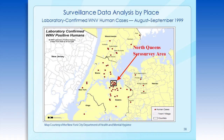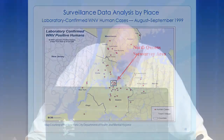This map is an example of laboratory-confirmed West Nile cases among humans for August and September 1999. Each red dot represents a human case. Cases are scattered throughout the area, although there appears to be a cluster in the North Queens area as indicated by the arrow. This suggests that there may have been a serial survey done in that area that could account for the cluster. It's important to understand your surveillance system — including how you collect your data and what's behind it.